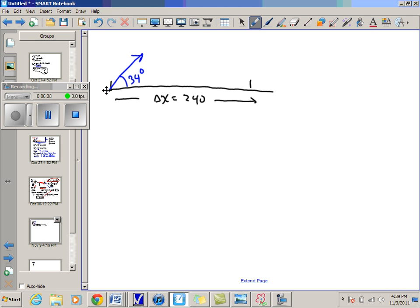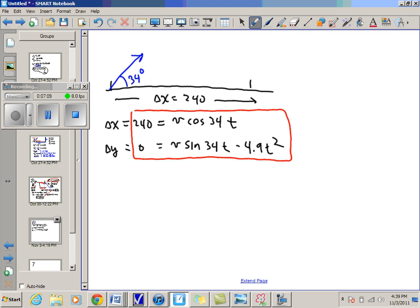So I'm going to do this the way we've done these problems in the past. I'm going to set up a delta x equation. Delta x equals 240, so 240 equals v cosine 34 t. And I'm going to set up a delta y equation. Delta y is zero, and that's v sine 34 t minus 4.9 t squared. So here I now have a system of equations to work with. I've got two equations with two variables, it's the same v and it's the same t, so I can solve using a substitution.